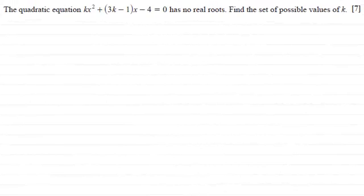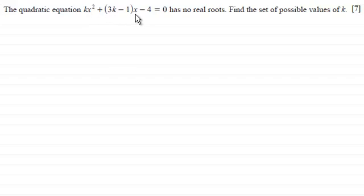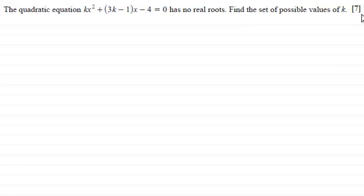Hi there. Now in this question, based on roots of a quadratic equation, we're given the quadratic equation kx squared plus 3k minus 1 times x minus 4 equals 0, and it has no real roots. We're asked to find the set of possible values of k for seven marks.